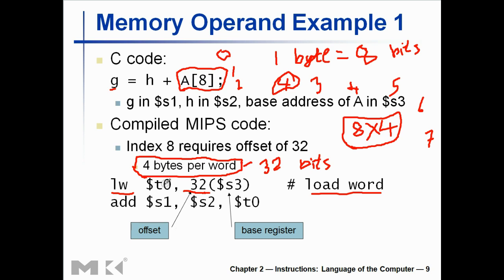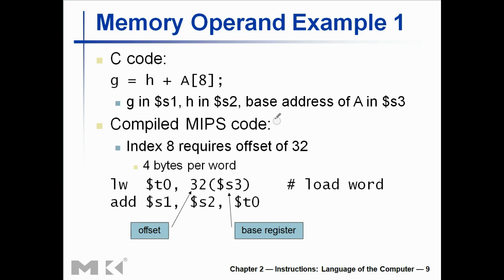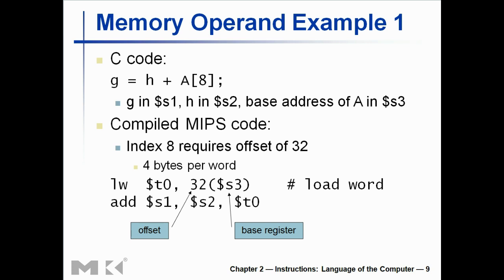You add the two values, s2 which is h, and t0 which is the value you just loaded — A[8] — and then save them on s1. Remember, I multiplied 32 to the base register s3 to get the address of A[8]. The code has three parts: loading, adding, and storing. If you have questions, you can ask in the comment section below.